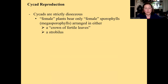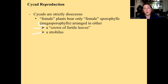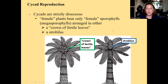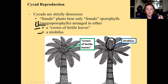On female plants with megasporophylls, depending on the species, the megasporophylls are either arranged in a strobilus or in what's called a crown of fertile leaves. Here are two different female cycad species: on the one on the right, megasporophylls are arranged in a strobilus; on the one on the left, the megasporophylls are arranged in a crown of fertile leaves in the middle of the plant.